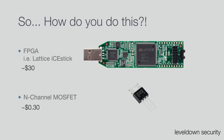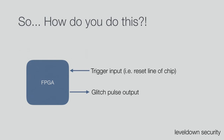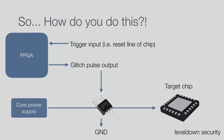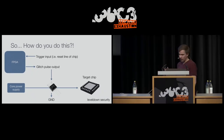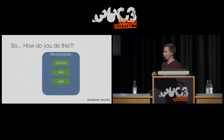The setup looks like this: you have your FPGA with a trigger input — for example, connected to the reset line of the chip — and an output for the glitch pulse. Your power supply to the chip runs through a MOSFET, and when the glitch pulse goes high, we drop the power to ground so the chip doesn't get power for a couple of nanoseconds. Let's talk about the power supply, because a microcontroller has a CPU core, Wi-Fi peripheral, GPIO, Bluetooth, and so on — these peripherals often run at different voltages.